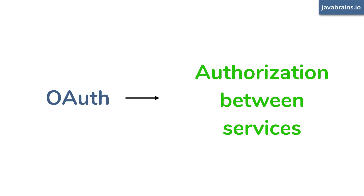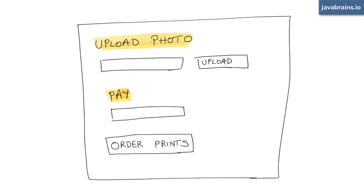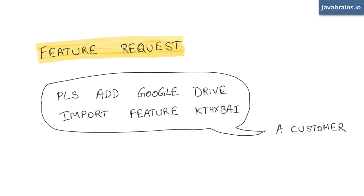Let's take this classic example of a photo printing service. You must have seen websites where you give them an image file and they ship printed photos to your home address. Imagine you're starting a new photo printing business. People upload photos to your website and order prints. But nobody keeps photos on their machines anymore — they use the cloud. So you keep getting feature requests to let users import their photos from Google Drive and print directly without downloading and uploading again.